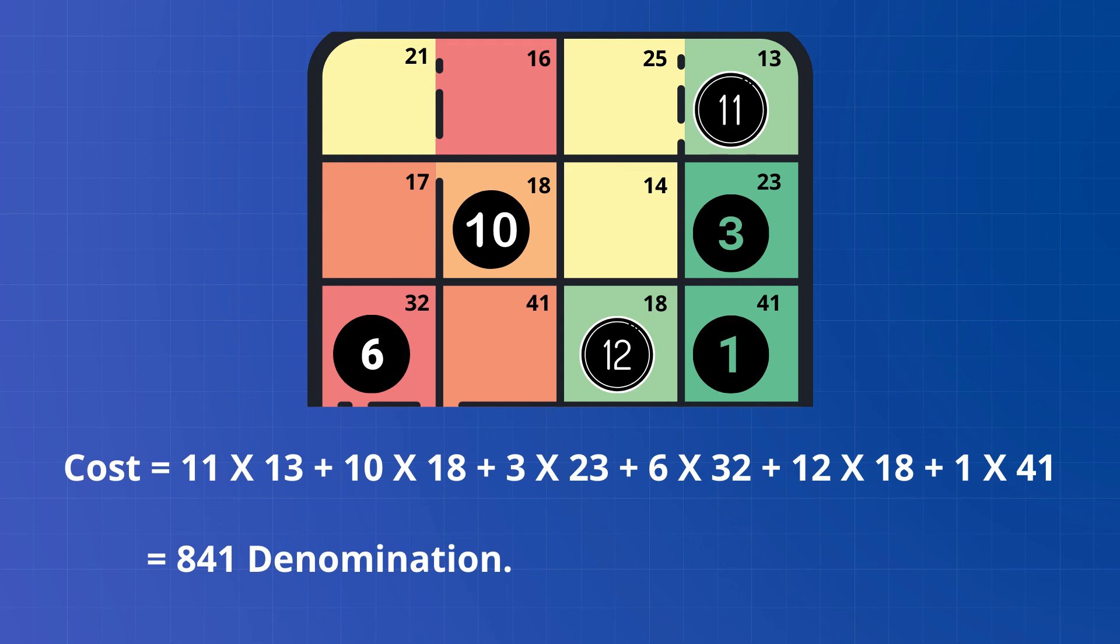The cost would be in this case 11 × 13 plus 10 × 18 plus 3 × 23 plus 6 × 32 plus 12 × 18 plus 1 × 41. Here 11, 10, 3, 6, 12, and 1 are the allocations that we have made. And finally the optimal cost is coming as 841 denomination.